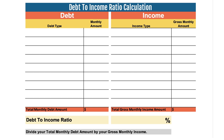Now we're gonna calculate your own debt-to-income ratio. You can use either the printable worksheet — like you can see here — or the spreadsheet workbook. You're just gonna fill in on the left side your debt type and the monthly amounts. For credit cards, put the minimum payment amount. On the right side, list all of your income types and the gross monthly amount. Then total them up — total debt amount and total gross monthly income — and divide your total monthly debt by your total gross monthly income.